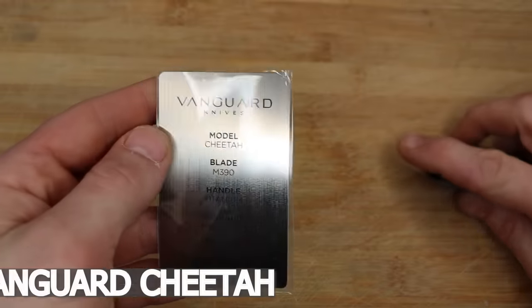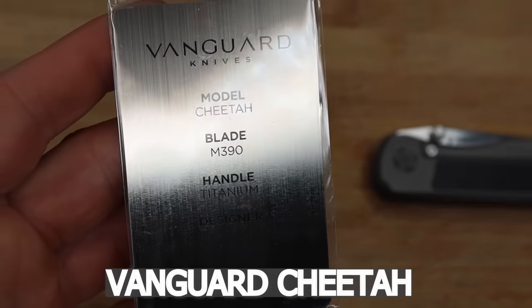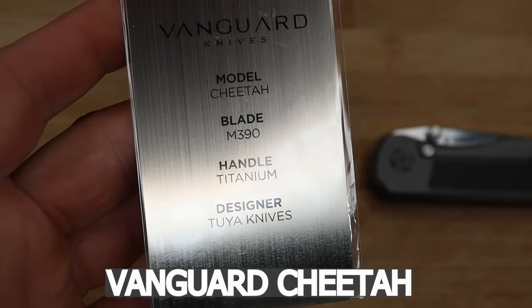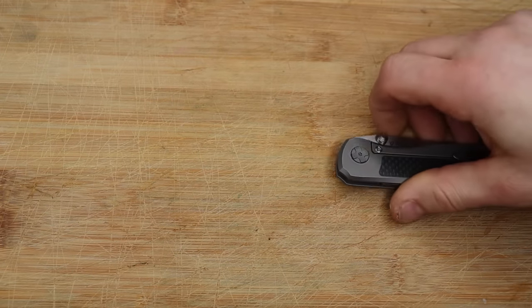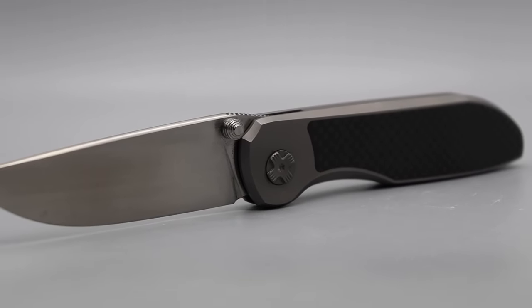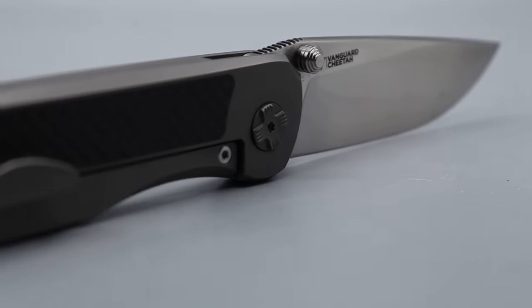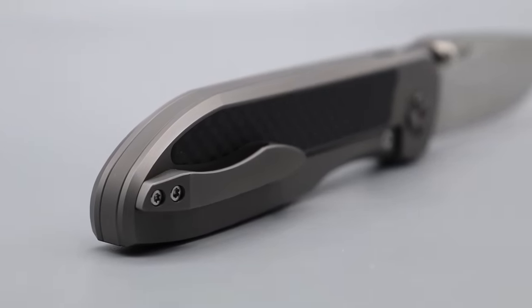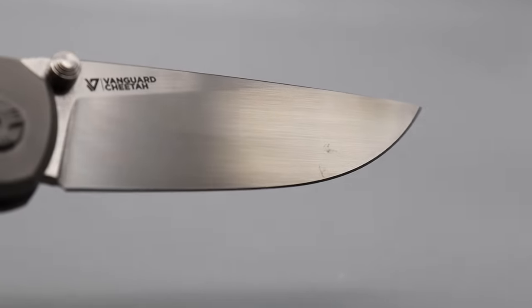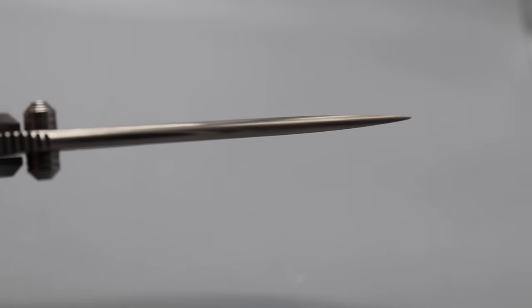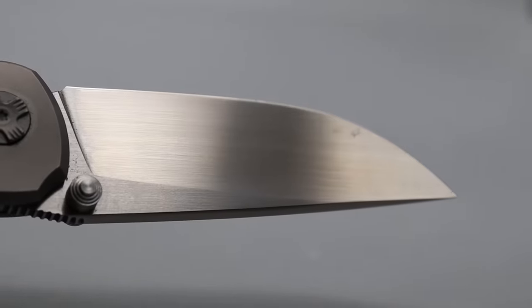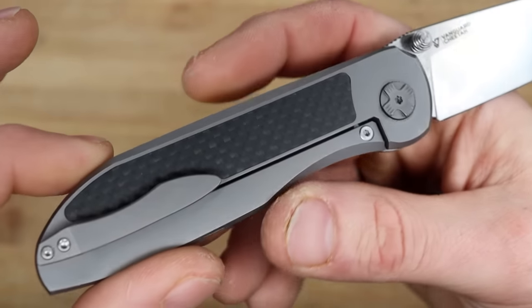The next one is the Vanguard Cheetah, and it has M390 steel, titanium handle, designed and made by Tuya Knives. I gotta say I really really like this one. I do have one complaint we'll get to. We have an M390 what looks like a hand satin finished blade, crowned spine, nice thinness behind the edge.